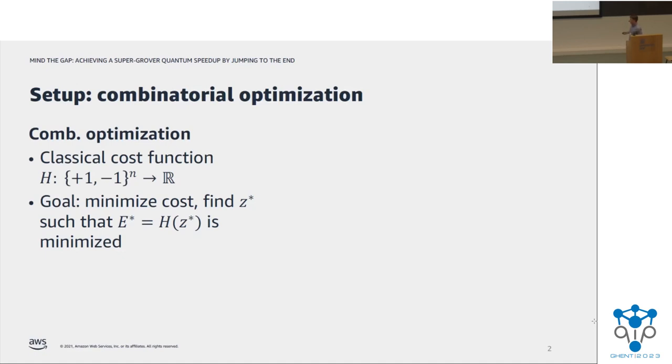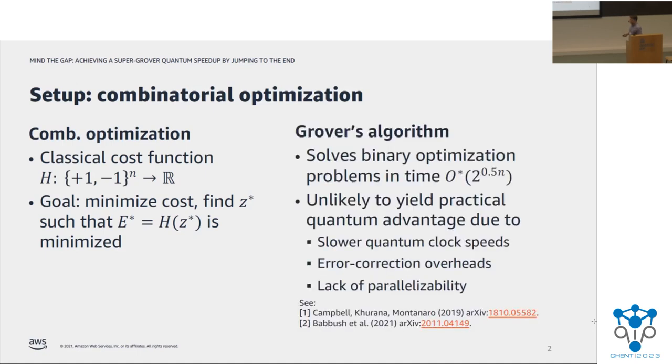So how might we solve this problem with a quantum computer? Of course we can run Grover's algorithm on it, which gives an immediate quadratic speedup compared to exhaustive enumeration classically. The runtime of Grover's algorithm is 2 to the 0.5 times n, where n is the number of binary variables that are input to the cost function. The O star notation is representing that we've hidden poly n factors, which come from evaluating this cost function H on certain inputs. So really we only care about the exponentiality of the runtime in this talk.